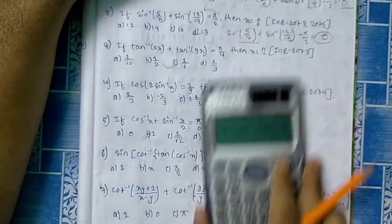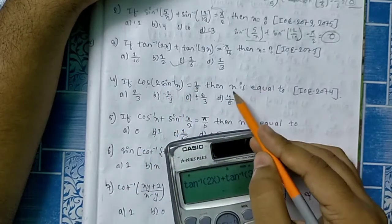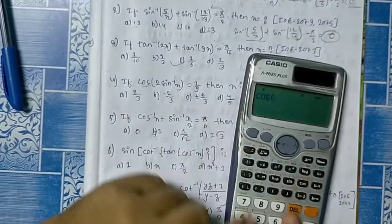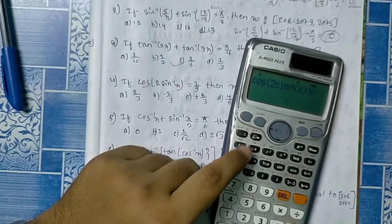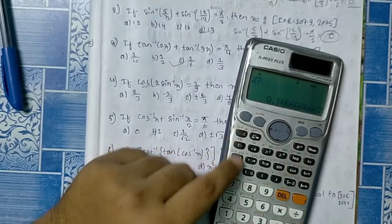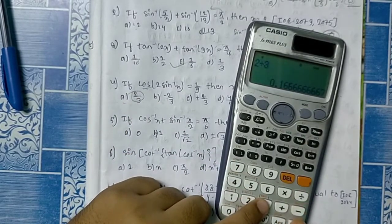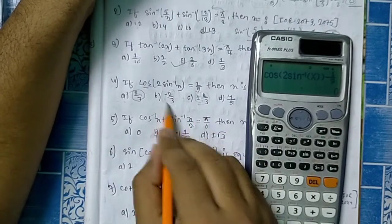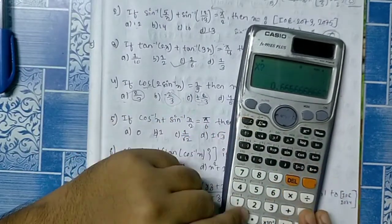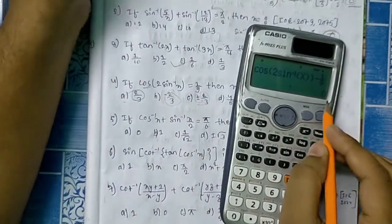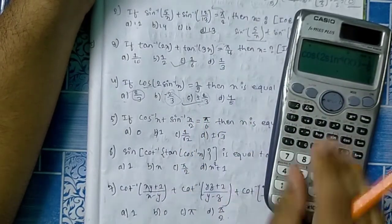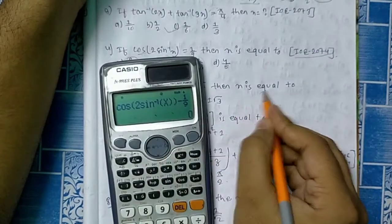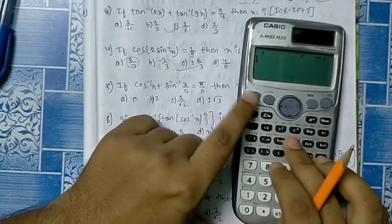C is the right answer. This is the equation of the form: if cos 2 sin inverse x equals 1 by 9, then x is equal to? x is equal to 1 by 2 minus 2 by 3, so x equals 1 by 3. Here we have minus 2, minus 3 minus, so x equals 1 by 3 and x equals 2y over 10 by 3.